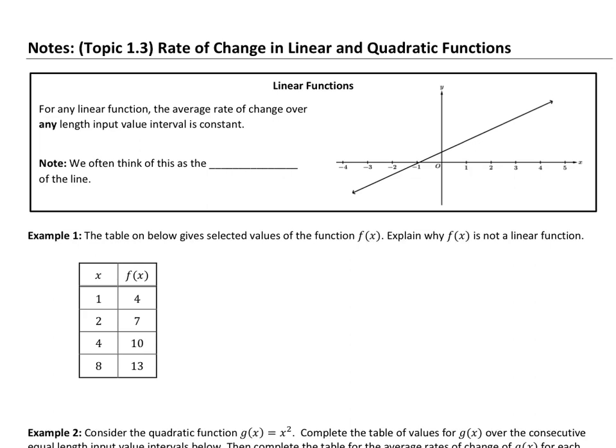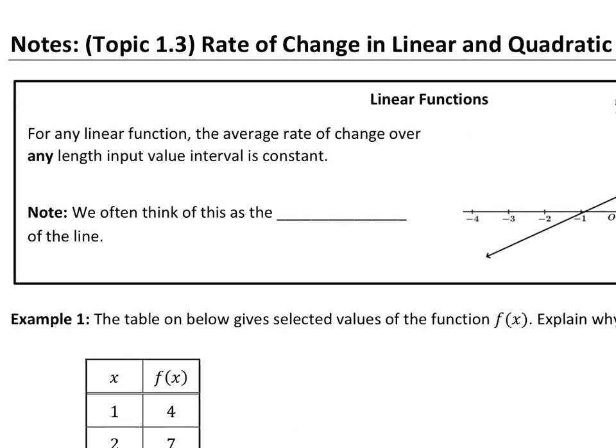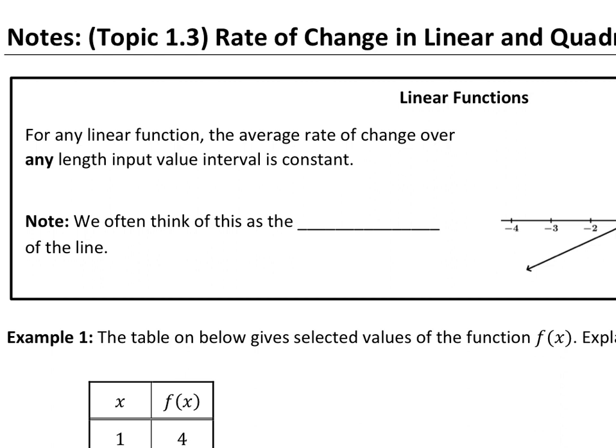For any linear function, linear functions look like lines, the average rate of change over any length input value interval is constant. That's a fact about linear equations. We're going to highlight the word constant, because for linears, it does not matter what distance I put in my interval — between 1 and 2, between 1 and 3, between 1 and 5 — the average rate of change is the same at all times. This is the definition of a slope.